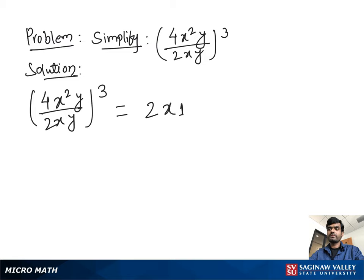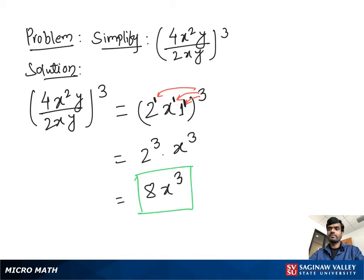That gives us 2x all to the third power. We distribute the exponent: 2 cubed is 8, x cubed is x³, and 1 cubed is 1 so we don't need to write it. Our final answer is 8x³.